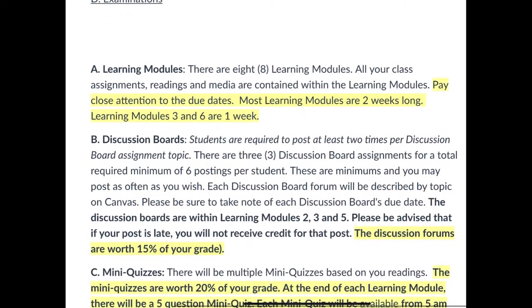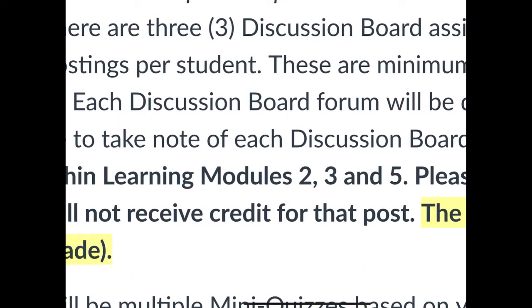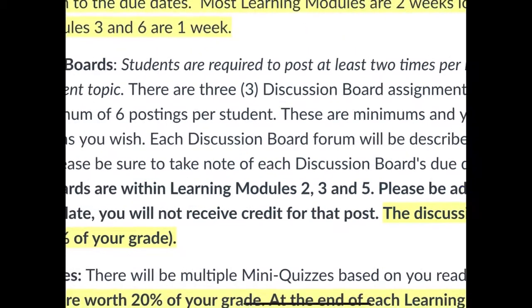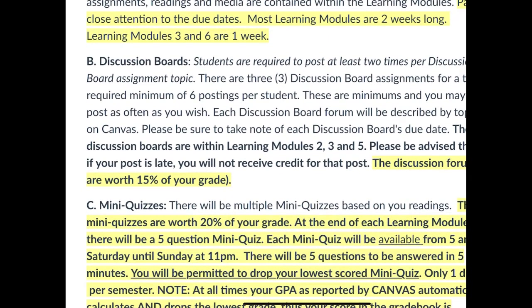These discussion boards — there are three of them in this course, in learning modules two, three, and five. Not every learning module has a discussion forum, so just be aware of that. There are three discussion forums and all three together are worth 15% of your grade. They're not hard. Students tend to blow them off — I don't know why. Each one is worth 5% because there are three of them.